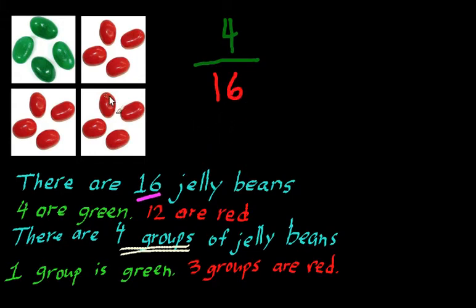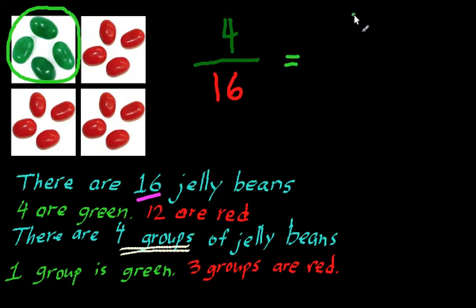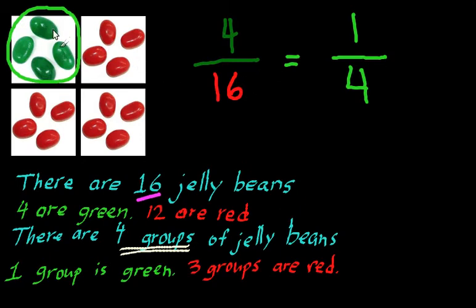But there's another way to think about it. There are four groups of jelly beans, each of which has four jelly beans in it. Of these four groups, how many groups are green? Well, exactly one — this group is green and the remaining ones are red. So you can also think of this as one group of green jelly beans out of four total groups. It turns out that four over 16, or four-sixteenths, is the same as saying one-fourth. For every four jelly beans, one of them will be green.